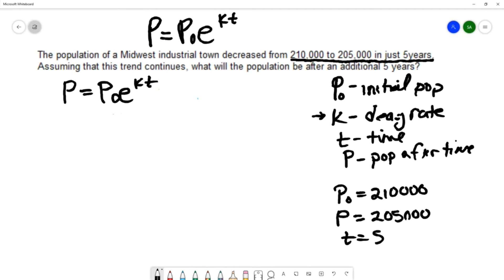We have an ending population of 205,000 and a starting population of 210,000 e^(5k). We're going to solve for that value of K, which is in the exponent, so we need to isolate this exponential portion.